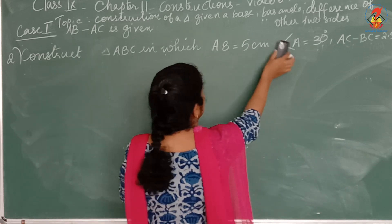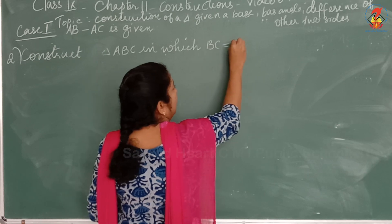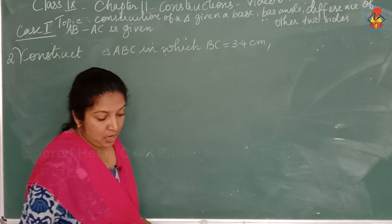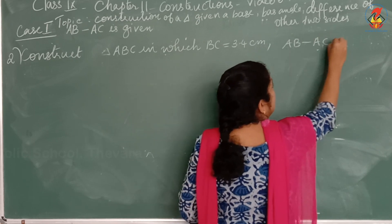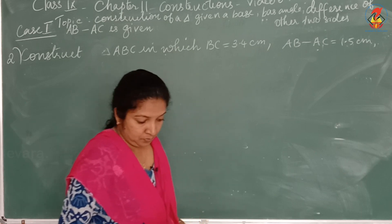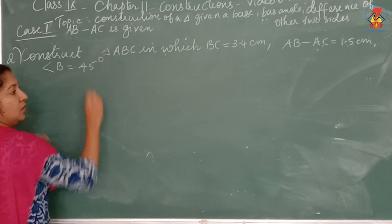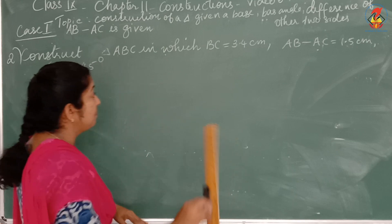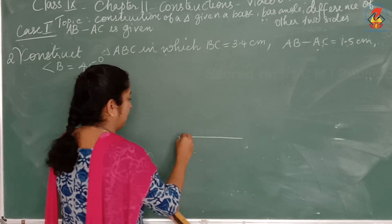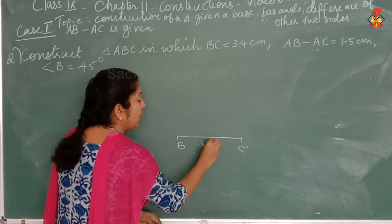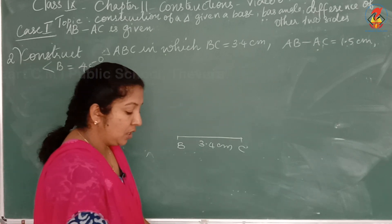Second question: construct a triangle ABC in which BC is equal to 3.4 cm, AB minus AC is equal to 1.5 cm, and angle B is equal to 45 degrees. Draw a line segment BC of 3.4 cm. Then we need 45 degrees at B.